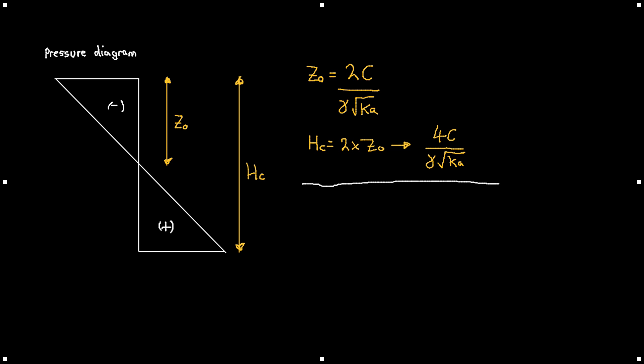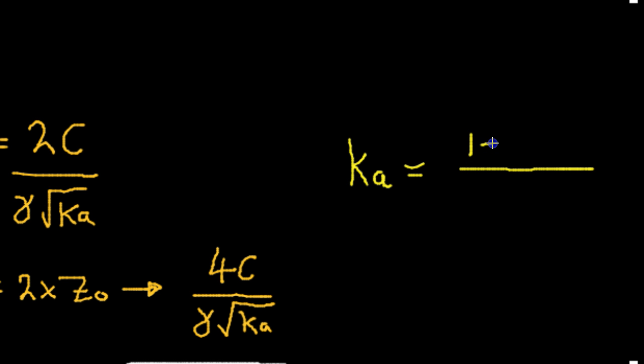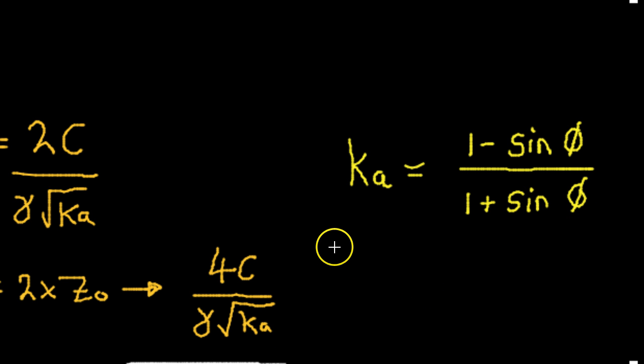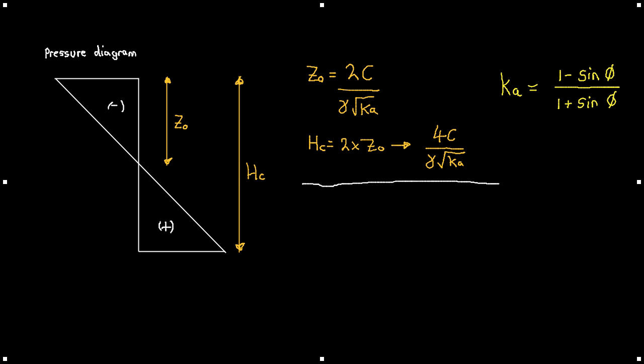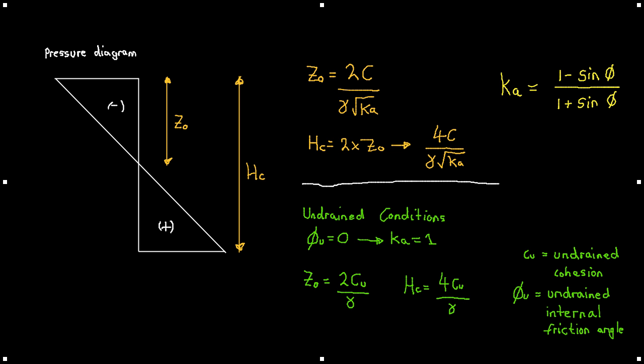The coefficient of active lateral earth pressure Ka is calculated as: one minus sine of the internal friction angle, all divided by one plus sine of the internal friction angle. For undrained conditions, the internal friction angle equals zero, so Ka simplifies to one. Substituting this in, Z₀ simplifies to two times the cohesion divided by gamma, and HC becomes four times the cohesion divided by gamma. This simplification only applies for undrained conditions when the internal friction angle equals zero.